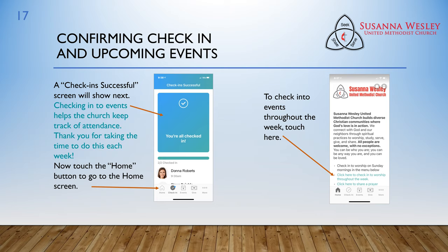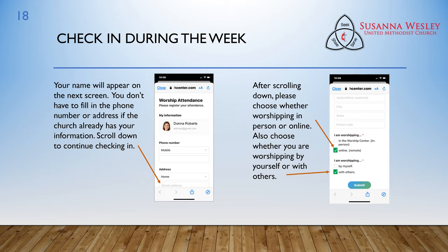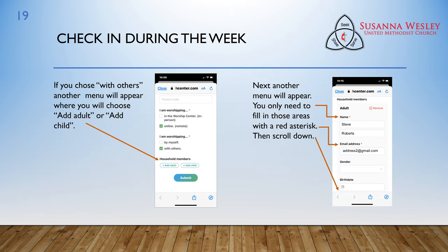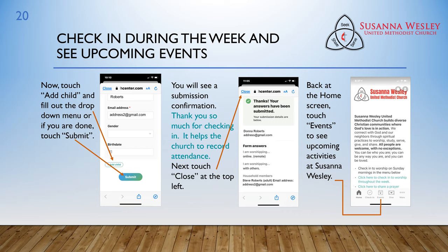Now touch the home button to go to the home screen. To check into events throughout the week, touch Here. Your name will appear on the next screen. You don't have to fill in the phone number or address if the church already has your information. Scroll down to continue checking in. After scrolling down, please choose whether worshiping in person or online. Also, choose whether you are worshiping by yourself or with others. If you chose With Others, another menu will appear where you will choose Add Adult or Add Child. You only need to fill in those areas with a red asterisk, then scroll down. Touch Add Child and fill out the drop-down menu. Or, if you are done, touch Submit. You will next see a Submission Confirmation. Thank you so much for checking in — it helps the church record attendance.